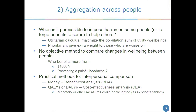The harder part is aggregation across people — when is it permissible to impose harms on some or forego benefits to some to help others? Utilitarian calculus says you add up utility change in the population and maximise that. Prioritarianism gives greater weight to people who are worse-off to start. But how do you measure utility change? We don't think there's any objective way to measure changes in practice. That leads us to practical methods we can compare — things like QALYs and DALYs, or money measures — which gets us to cost-effectiveness and benefit-cost analysis.